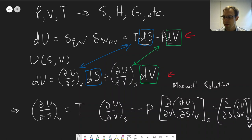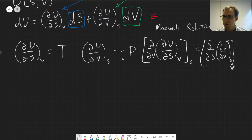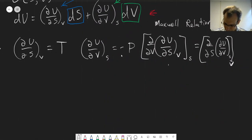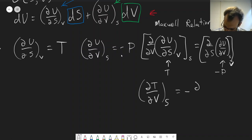And so this cross derivative is equal. And what we can do is recognize that we have some thermodynamic functions that can be plugged in here. This one is temperature, and this one is negative pressure. So we can say that (∂T/∂V)_S is equal to the negative of (∂P/∂S)_V. And so this is our Maxwell relation that comes from internal energy.